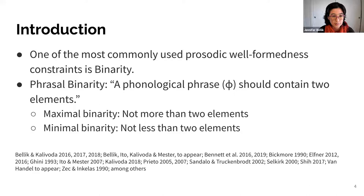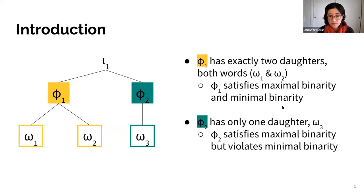One of the most commonly used prosodic well-formedness constraints is binarity, and I'll focus on phrasal binarity here. Phrasal binarity says that a phonological phrase (phi) should contain two elements, broken down into two components: maximal binarity, which says the phrase shouldn't contain more than two elements — penalizing phrases with three, four, or five elements — and minimal binarity, which says the phrase shouldn't have fewer than two elements, penalizing a phrase with just one element.